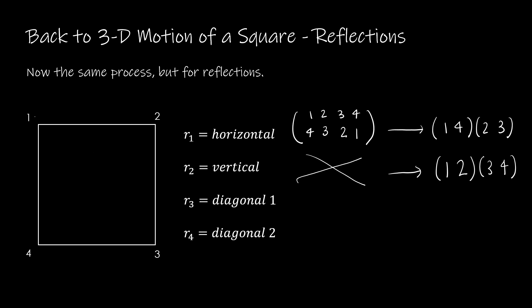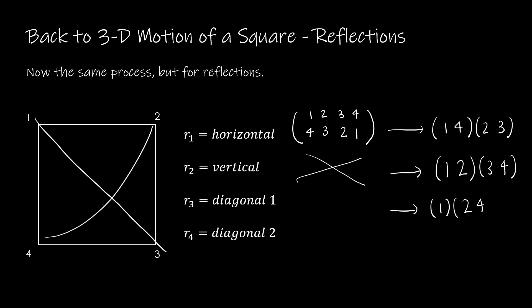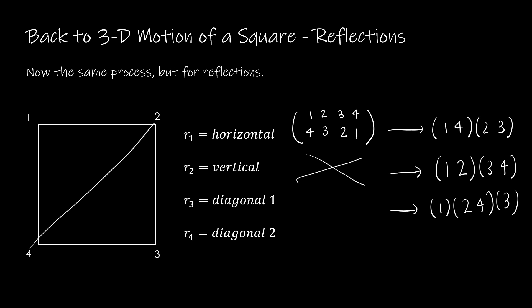For the first diagonal reflection, 1 stays where it is — a one-cycle. Then 2 goes to 4 and 4 goes to 2. And 3 stays at itself. For the other diagonal: 1 goes to 3 and 3 goes to 1, while 2 goes to 2 and 4 goes to 4.